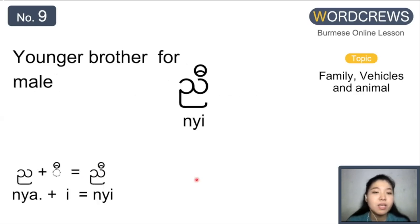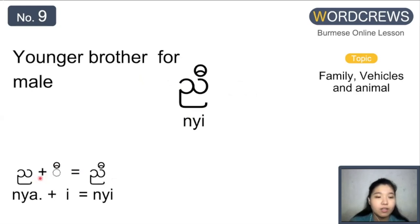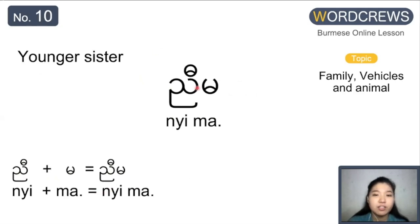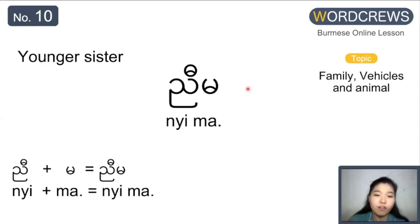Younger brother for male is ni — only one word, one syllable. Let's differentiate: the first is ni and the i. So it's ni. Next one is younger sister. Younger sister is ni ma. You have ni from the younger brother, and then we just put ma — similar to the ma from the elder sister. So ni ma is younger sister.